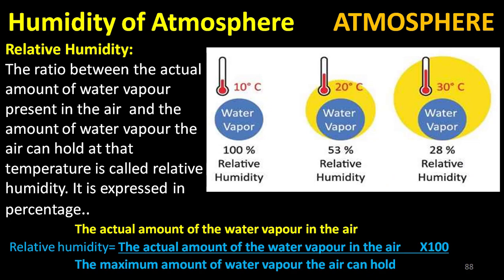This type of measurement of humidity is not useful because it doesn't take temperature into consideration. Relative humidity is the ratio between the actual amount of water vapor present in the air and the maximum amount of water vapor the air can hold at that temperature. It is expressed in percentage. Relative humidity = (actual amount of water vapor in the air ÷ maximum amount of water vapor the air can hold) × 100.